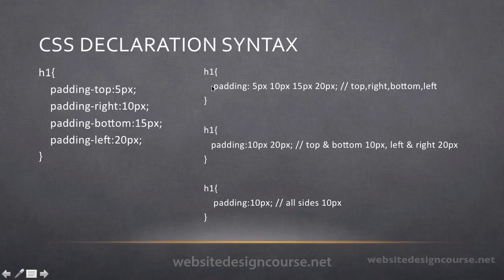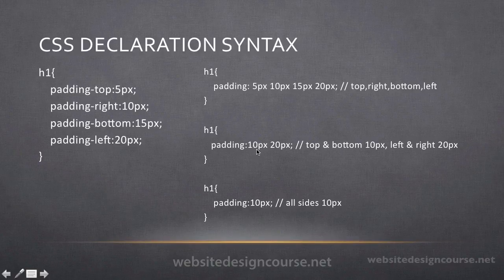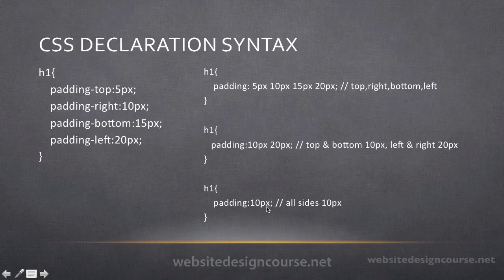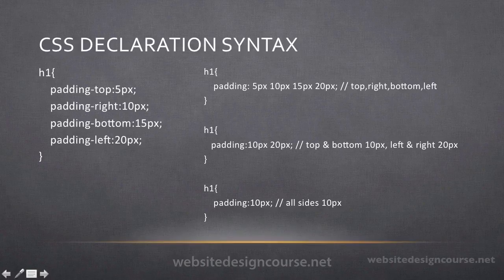Here's another variant that's even shorter. If there are only two values in the padding property, the first one refers to top and bottom padding and the second refers to left and right. And if we just have one value in the padding declaration, that means 10 pixels are applied to all sides — top, right, bottom, and left. With CSS there are several different ways to write these declarations, and you'll learn as you go which properties have shorthand variants and which don't.